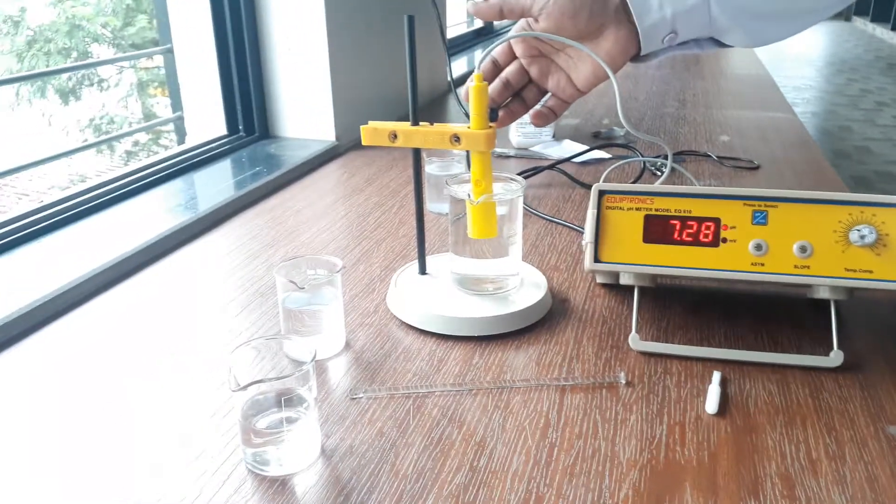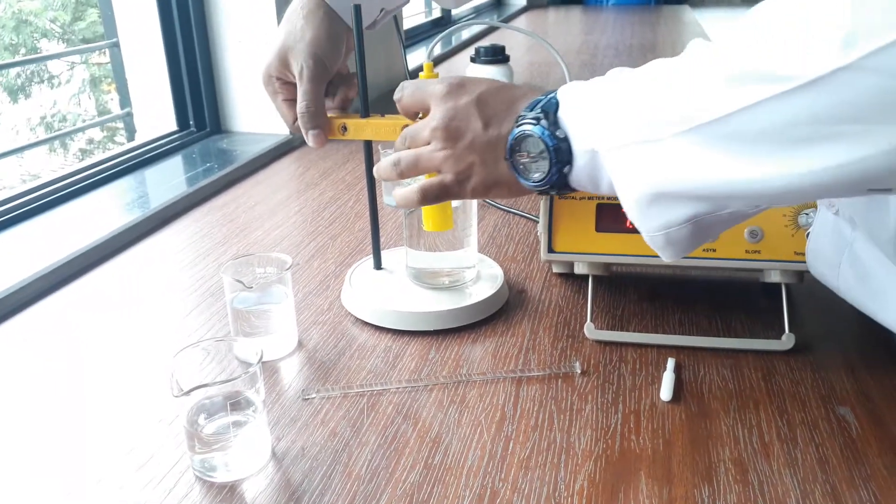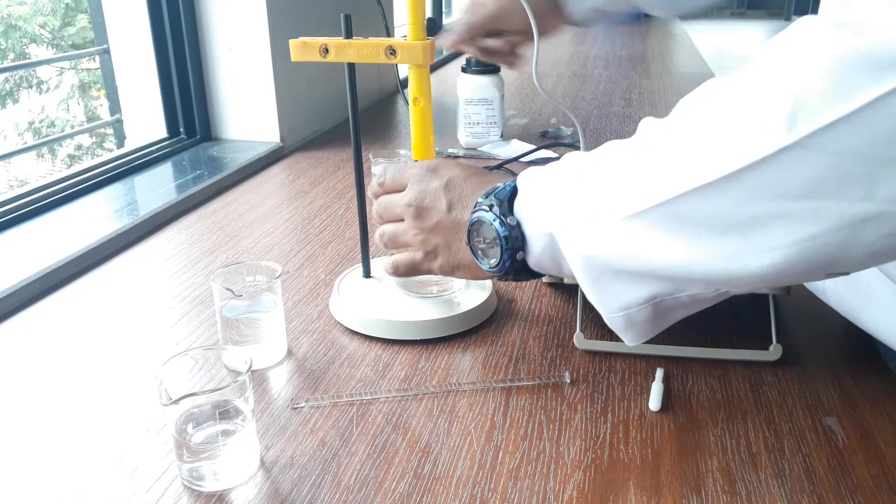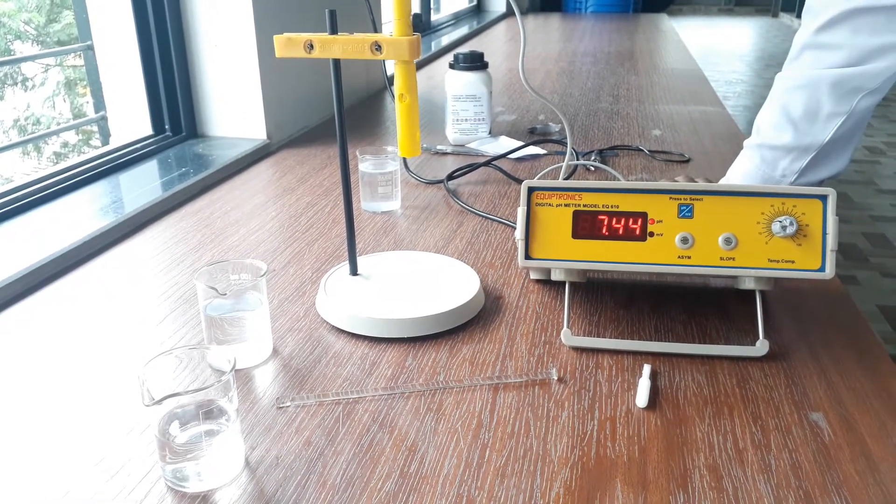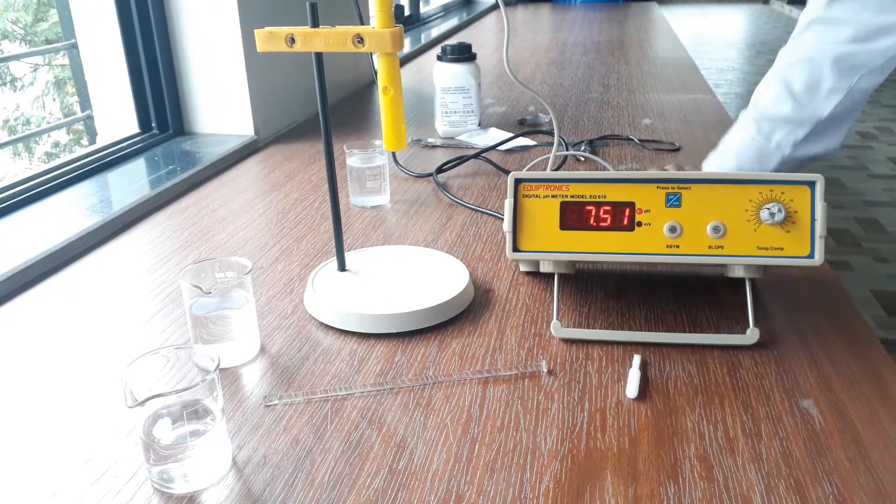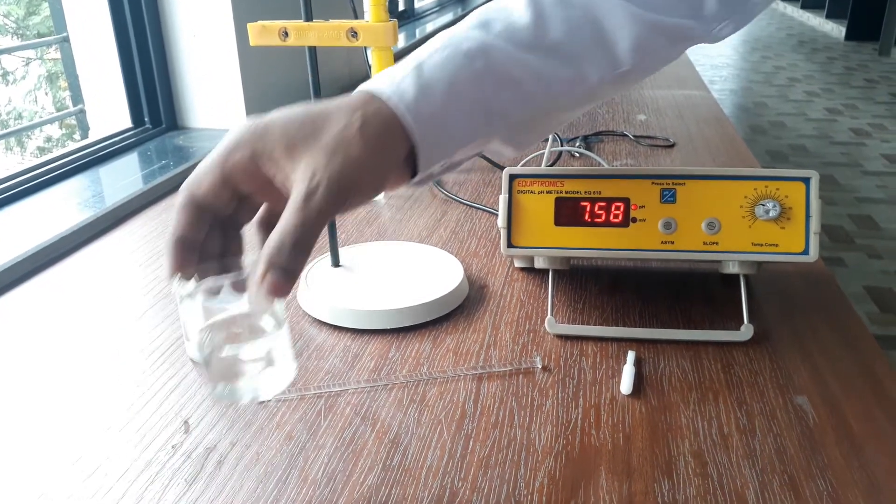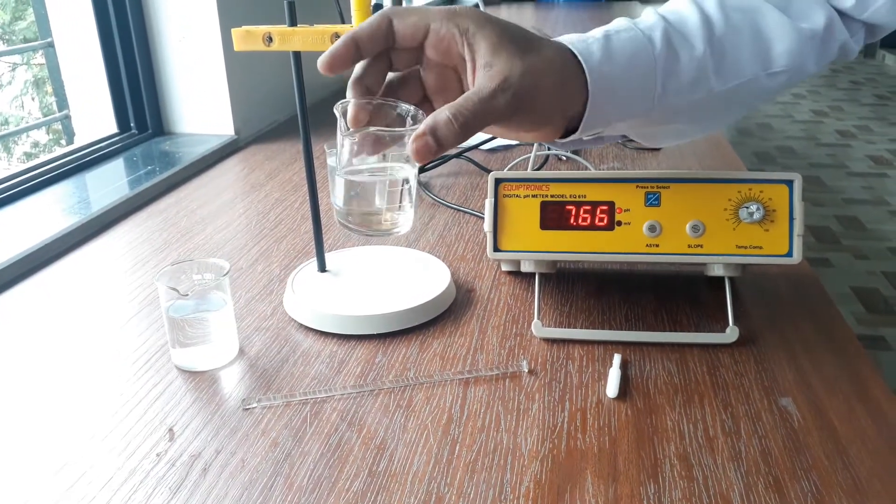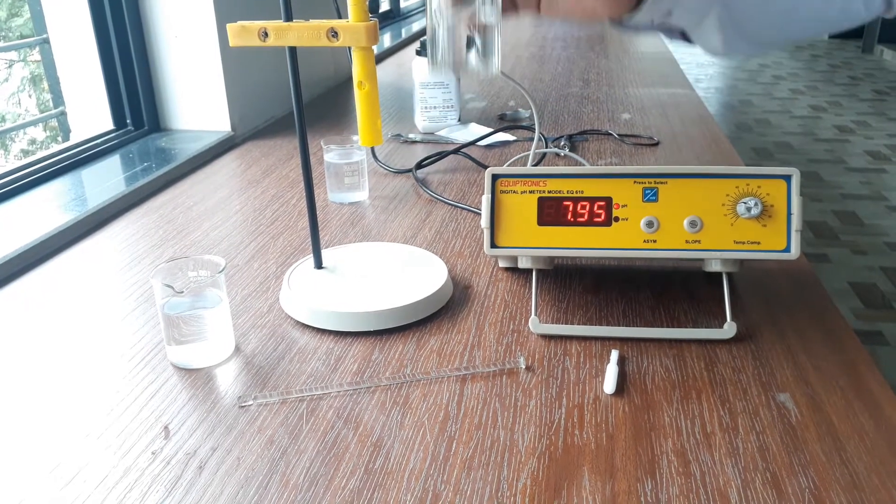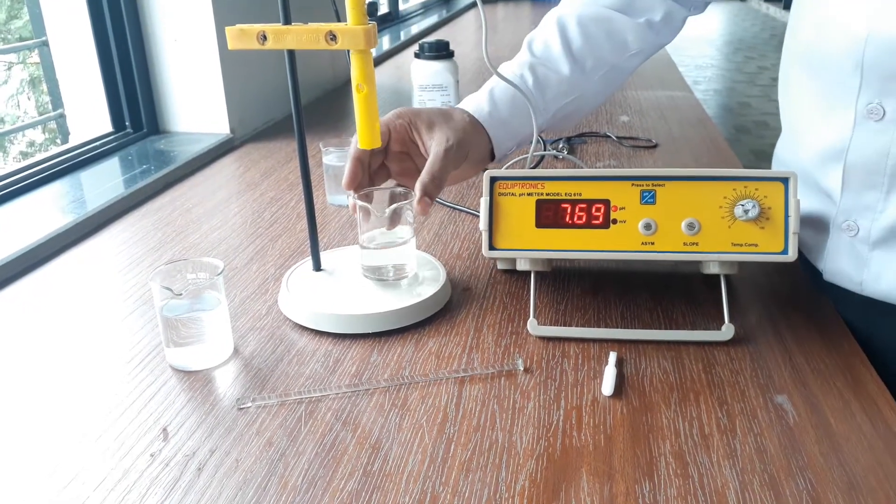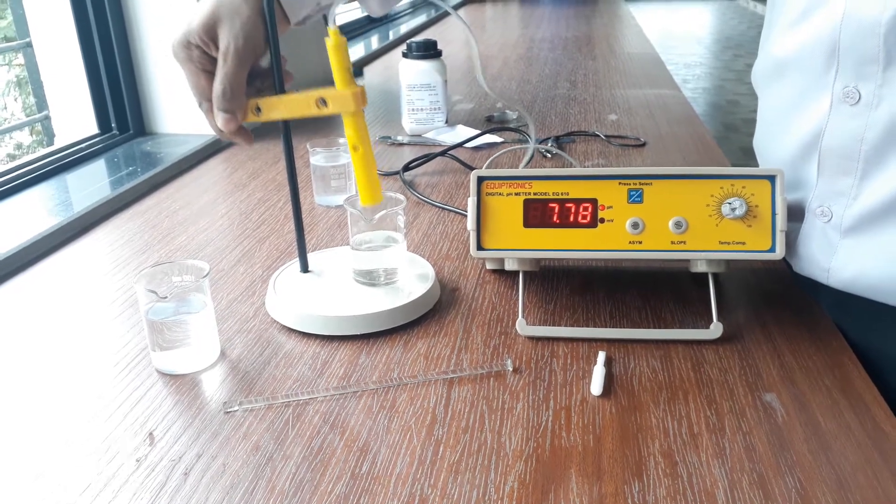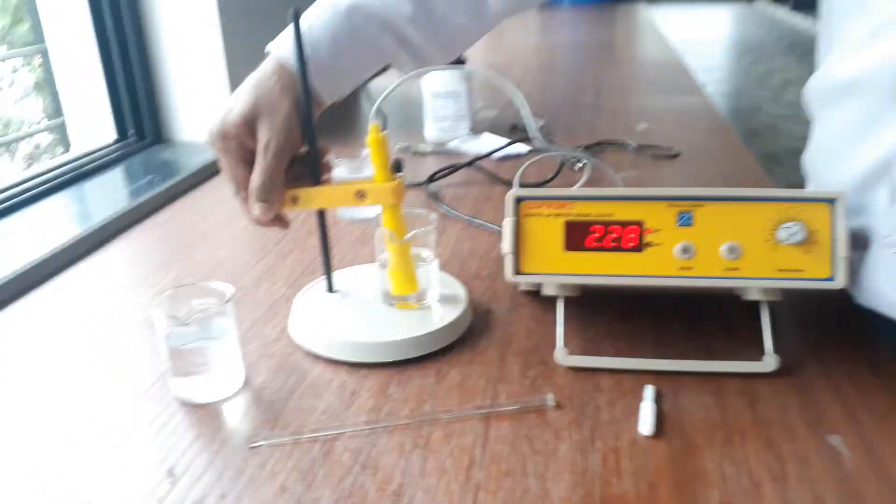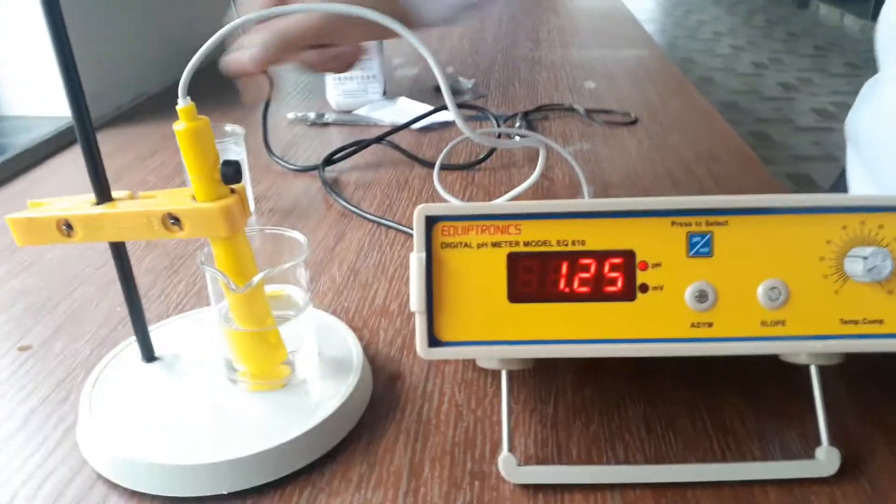After washing, then we will take another solution. In the first case we have taken water so there is no need to wash, but still for showing you how to wash we are doing that. Now this is our HCl, hydrogen chloride. So we will dip this pH meter in this solution.